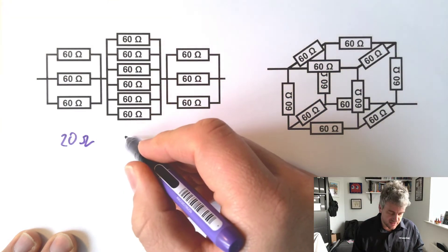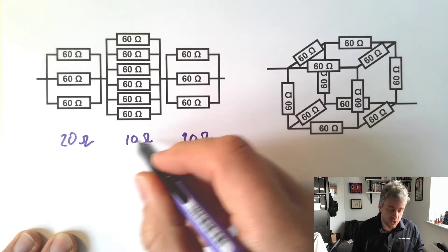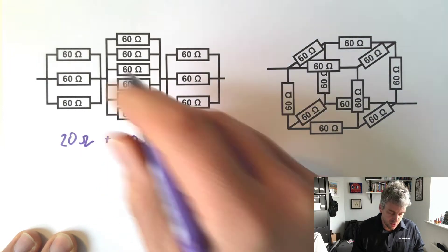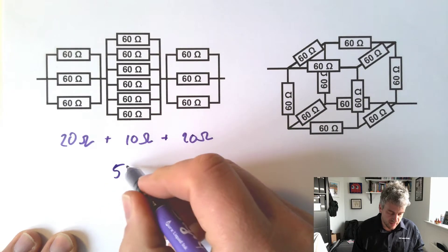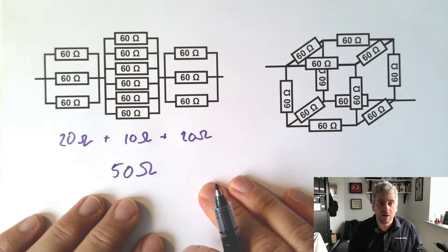This is a sixth of that, 10 ohms, and a third of that, so it's 20 ohms. So the total resistance of this lot should be 50 ohms, and you can actually build these, and it works, and it works pretty well.